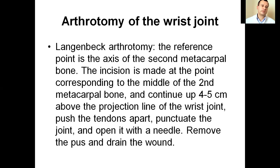Arthrotomy of the wrist joint — Landersberg arthrotomy: the reference point is the axis of the second metacarpal bone. The incision is made at the point corresponding to the middle of the second metacarpal bone and continues 4–5 cm above the projection line of the wrist joint. The tendons are pushed apart, the joint is punctured with a needle and opened, the pus is removed, and the wound is drained.